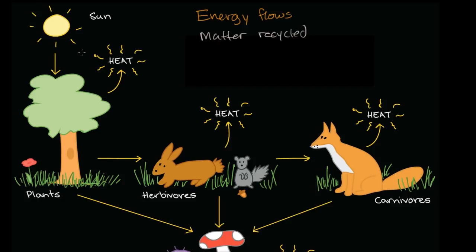Let's first think about energy. The energy for most ecosystems originally comes from the sun. There are other sources — moonlight, which essentially comes from the sun, and geothermal energy — but the sun is the source of most energy for most ecosystems. How does the ecosystem make use of that energy? How does that energy get stored within the ecosystem, especially as biomass?